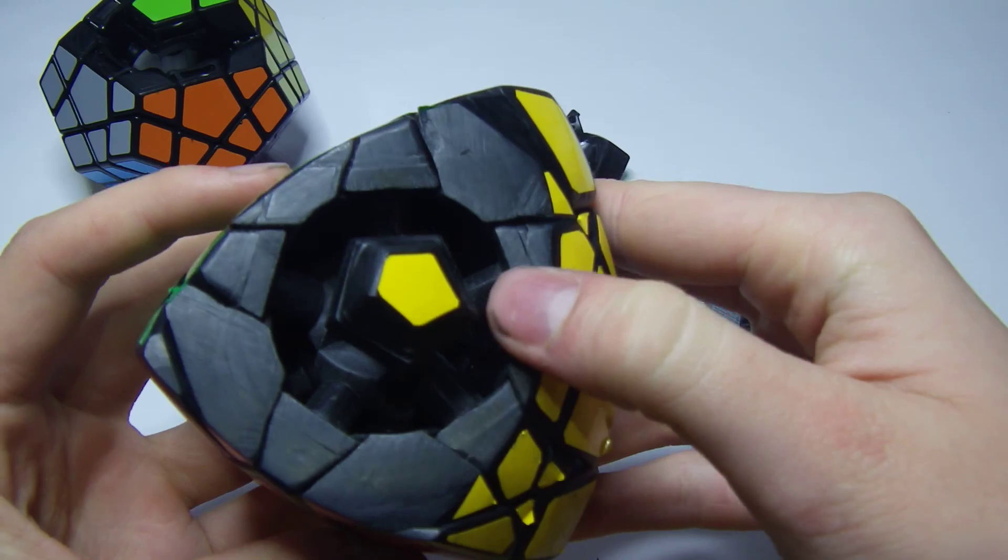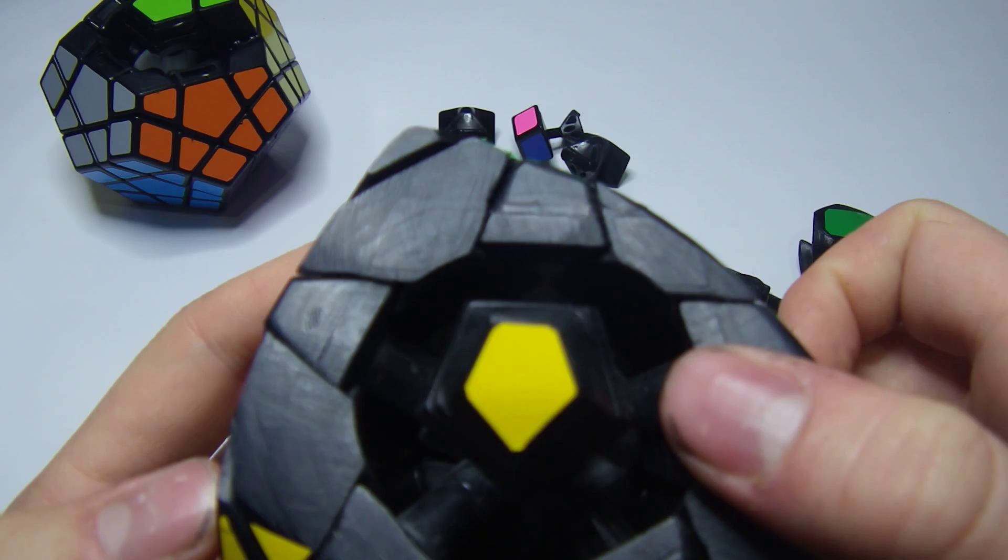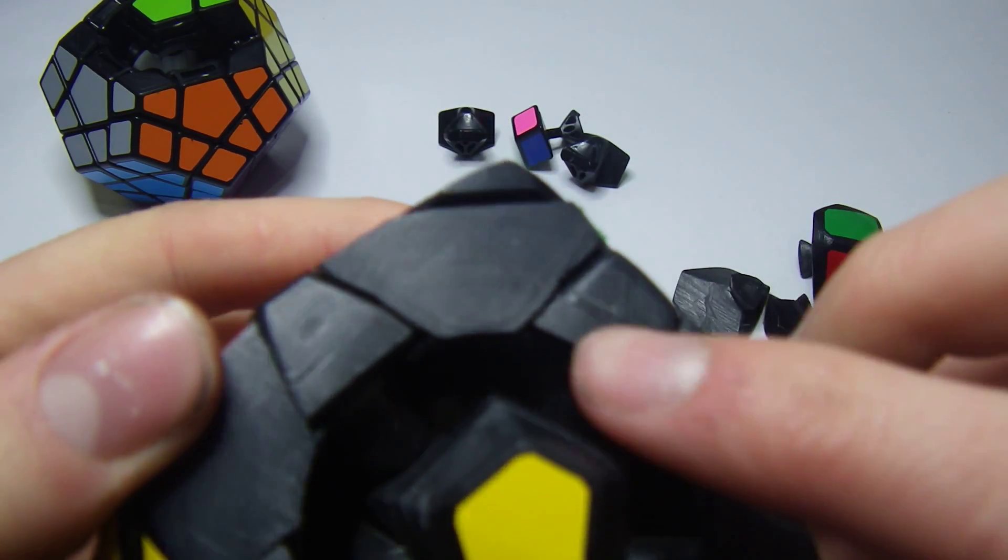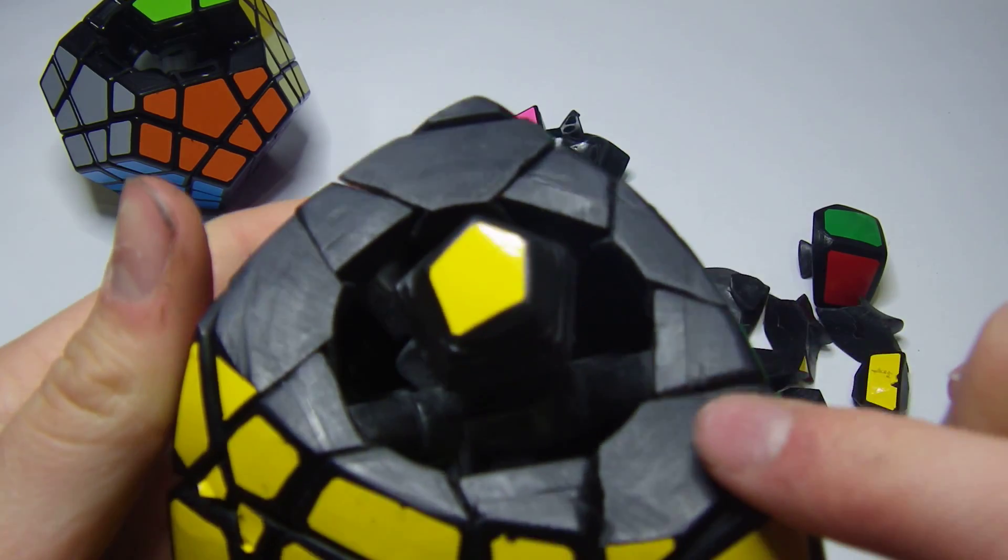And then you can see here the, you can see the faint, or maybe not so faint, extending line here of the original puzzle. You can kind of see it on that piece where it was extended. And then these are all centers.